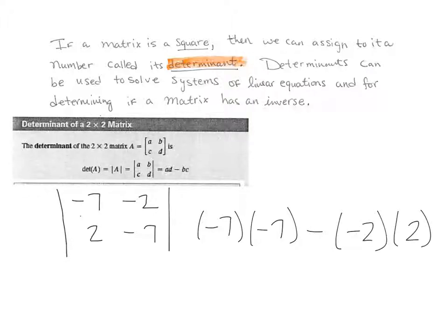So in this case I get 49 minus, and then over here negative 2 times 2 is negative 4. And 49 minus negative 4 actually becomes 49 plus 4, so the determinant of this matrix happens to be 53. So here's the determinant for this 2 by 2 matrix.